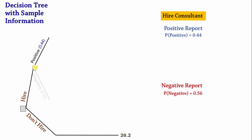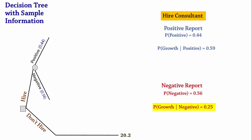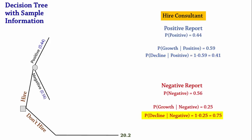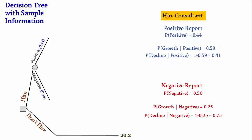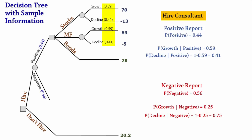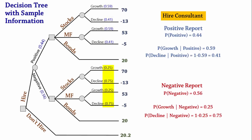Now, suppose given a positive report, the probability of a growing economy is 0.59, and the probability of growth given a negative report is 0.25. This means that the probability of decline given a positive report is 1 - 0.59, which is 0.41, and the probability of decline given a negative report is 1 - 0.25, which is 0.75. These probabilities are called posterior probabilities — we will discuss them in detail in the next video. So if the report is positive, we paste the original tree with posterior probabilities 0.59 and 0.41, and do the same for the negative report with probabilities 0.25 and 0.75.